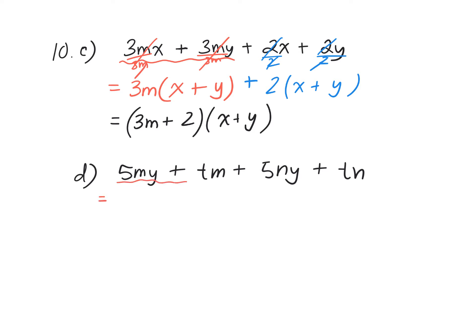For this, what's the common factor? It's just M. So I'm left with 5Y plus T. And then for this, we have positive. What can both of these be divided by? N. So I'm left with 5Y plus T.